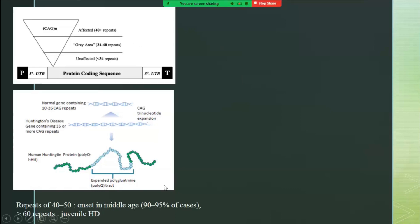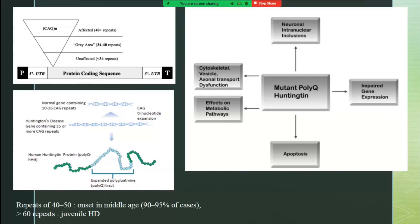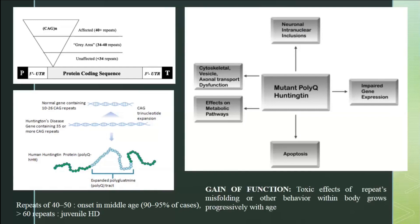If repeats are 40 or more, it causes classic Huntington's disease. More than 60 repeats can cause juvenile Huntington's disease. Unlike Fragile X — which is a loss of function due to no transcription initiation, no mRNA, no protein — in Huntington's disease the expanded repeats add a lot of glutamine to the protein, creating a polyglutamine tract. This toxic gain of function exerts harmful effects on the protein's various functions. So Huntington's disease is a gain of function disorder.